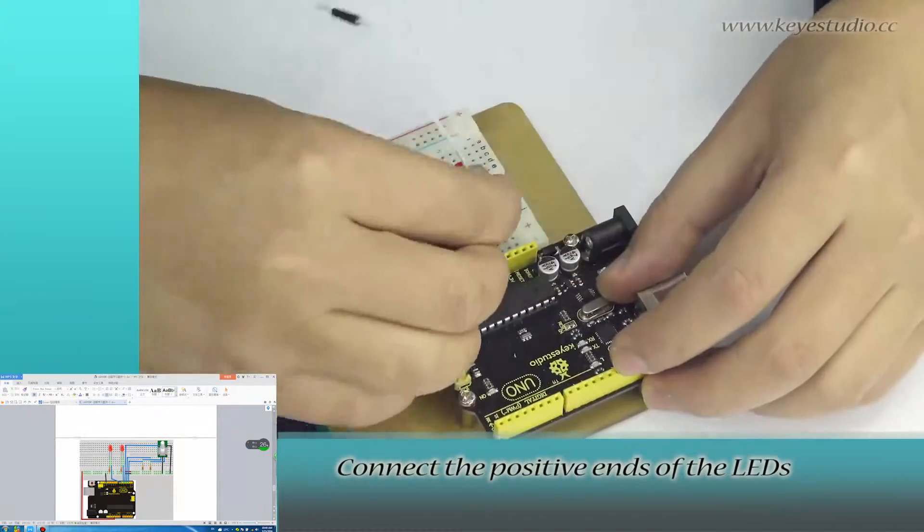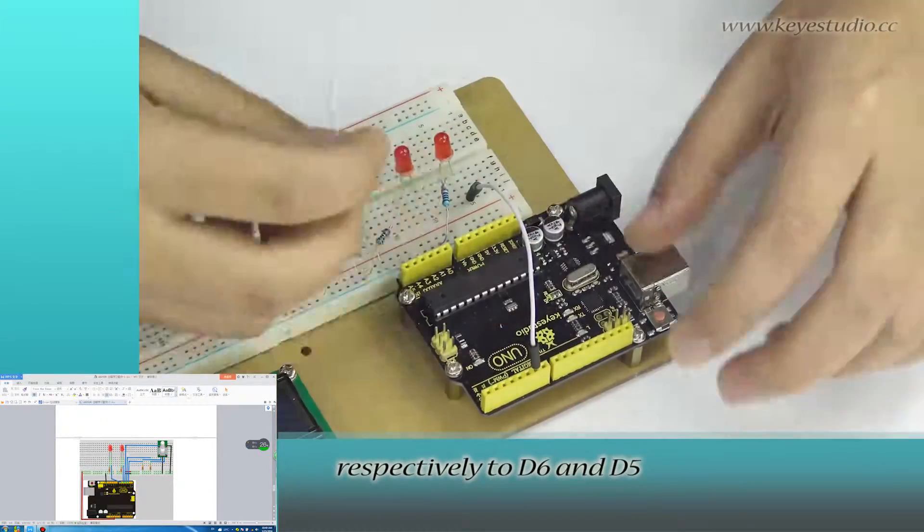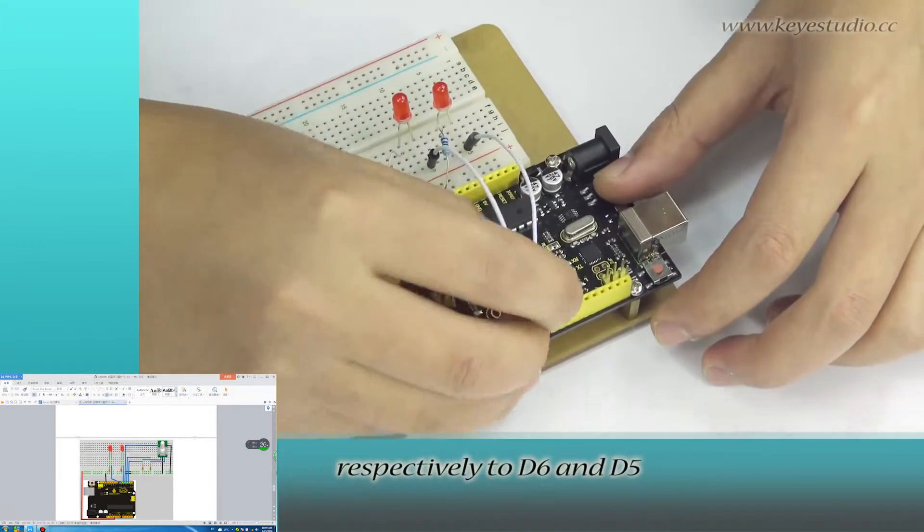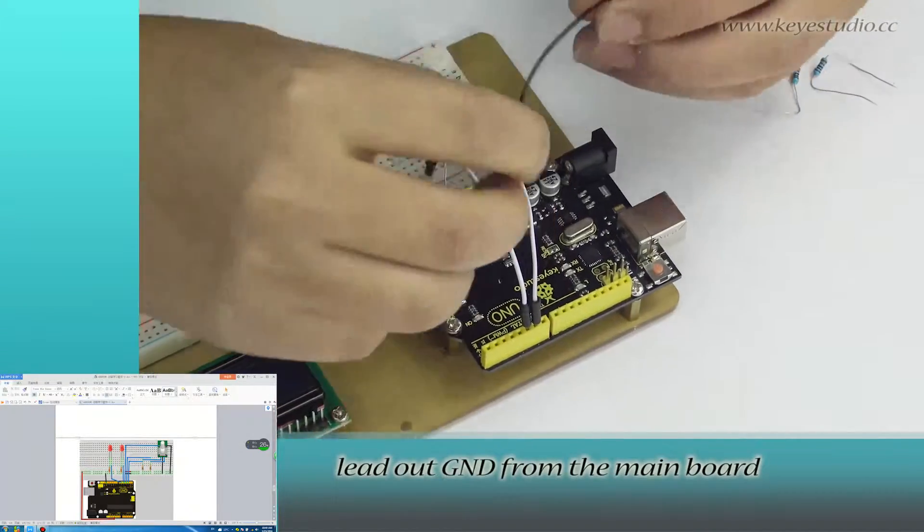Connect the positive ends of the LEDs respectively to D6 and D5. Lead out ground from the main board.